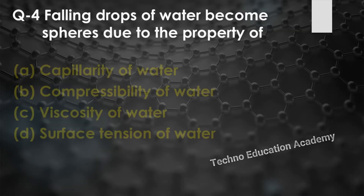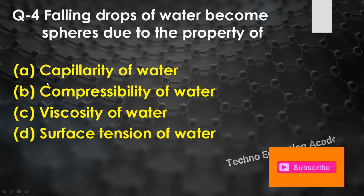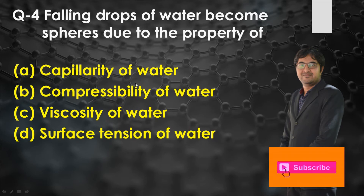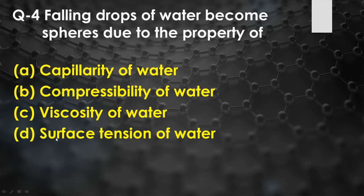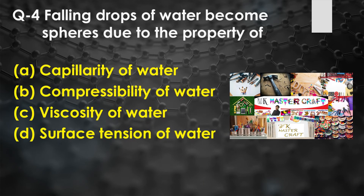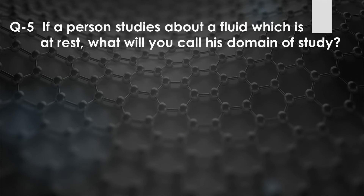Question number four: Falling drops of water become spheres due to the property of — option A: capillarity, option B: compressibility, option C: viscosity, option D: surface tension. The falling drops of water become spherical due to the property of surface tension — the shape of a bubble or drop is spherical because of surface tension. The right answer is option D.